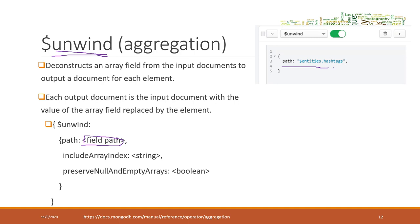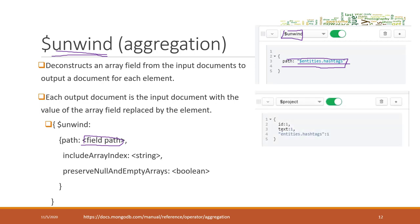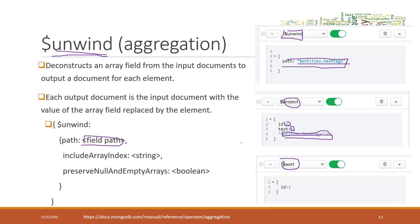For unwind, you need to provide the path name of the field which is a list. For example, to unwind all the hashtags, use unwind with the path set to the hashtag field inside entities. Then use project to see the tweet ID, text, and hashtags, and sort by tweet ID — so we can see for each tweet how many different hashtags they are using.